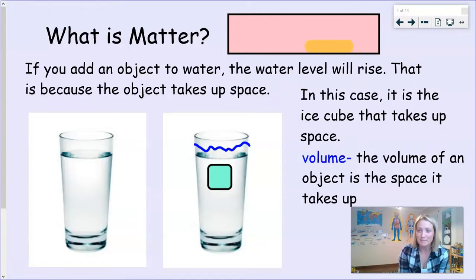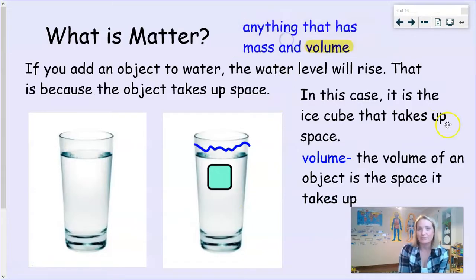So what is matter exactly? Well, simply put, matter is anything that has mass and volume. To explain the word volume, I've used the example below. If you add an object into water, the water level will rise. That's because an object takes up space. So in the example I've given, I've got a glass of water and I pop in an ice cube. Well, the ice cube, when it goes into the water, forces the water level to rise, proving that the ice cube takes up space. So therefore it has volume. Volume, simply put, is that an object occupies space.